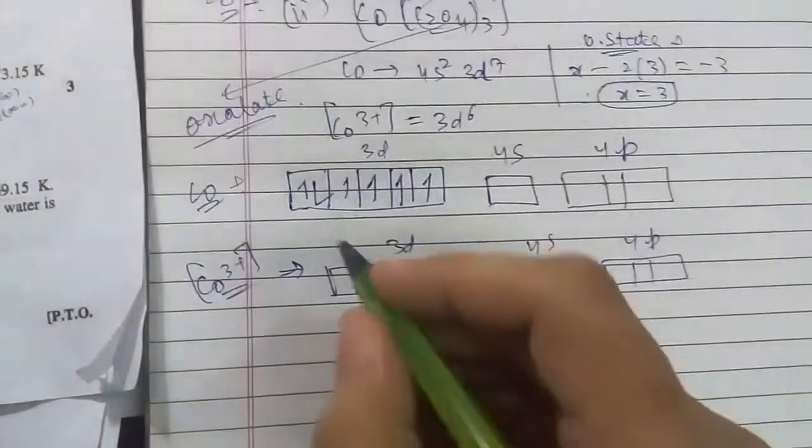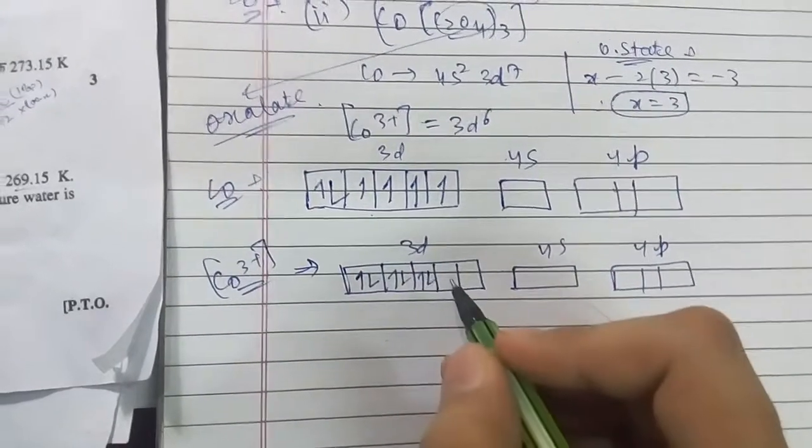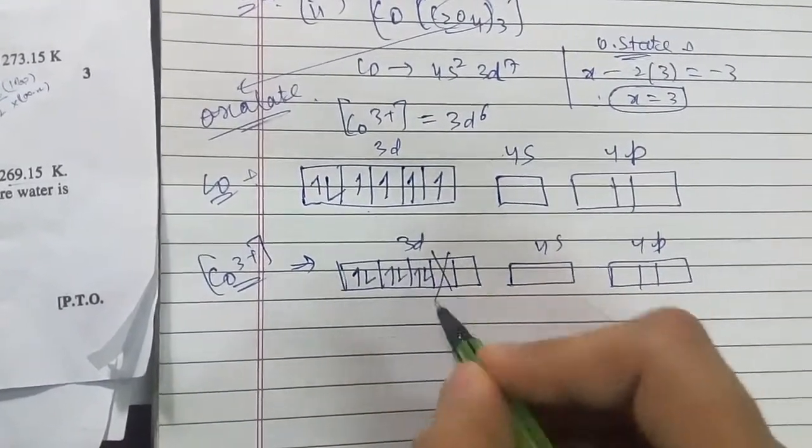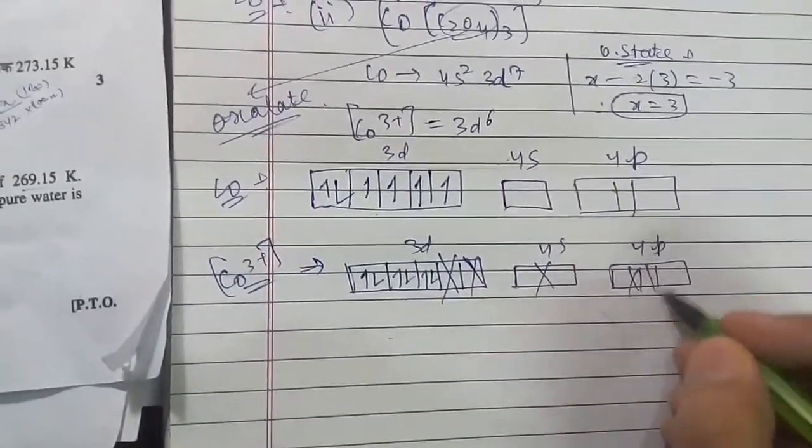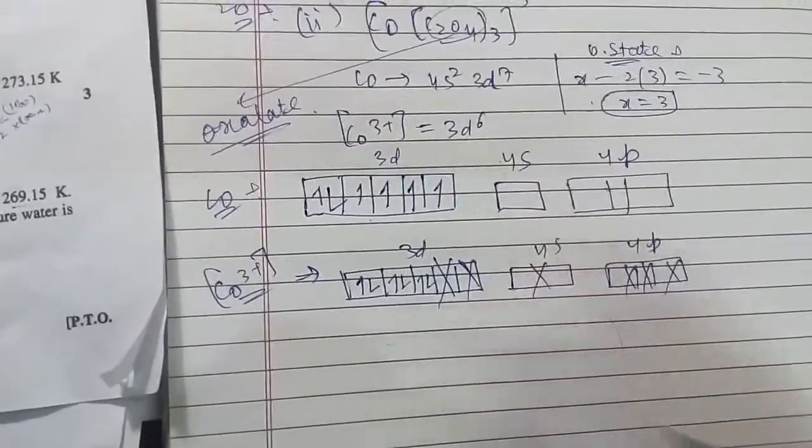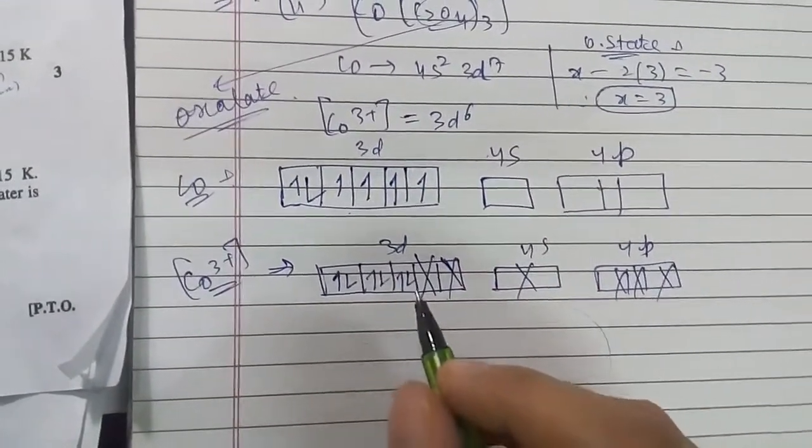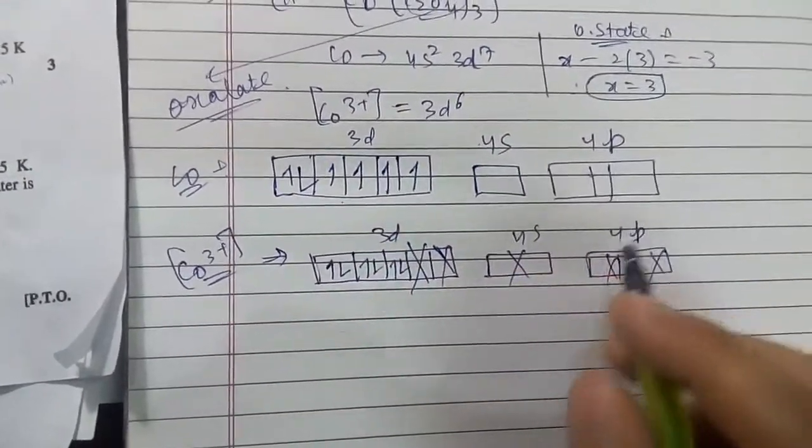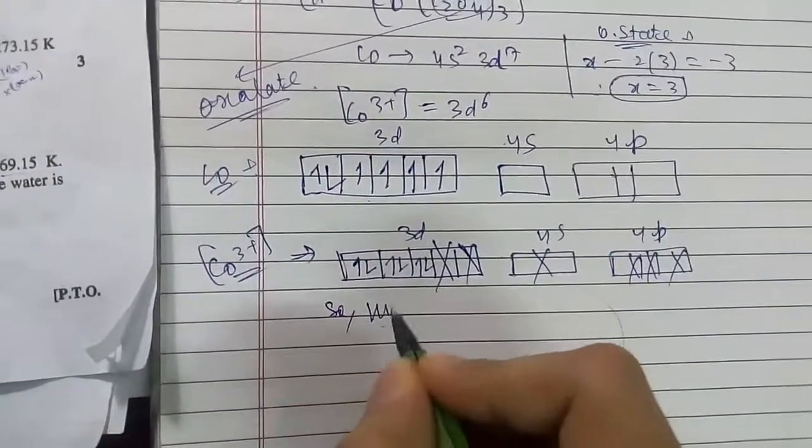Right, now how many spaces are there? For one oxalate, this is 2, this is 3, this is 4. As oxalate takes two places at a time because it is bidentate, so hybridization is d2sp3.